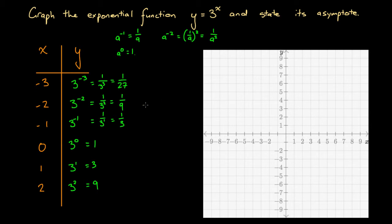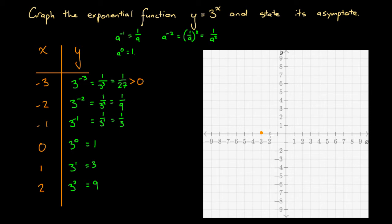So we've got a few points. Let's plot them on this graph to see what this function looks like. At x equals minus 3, y equals 1 over 27 — that's 3 units left of the origin and a tiny fraction of a unit up, so we draw this point about there. It's very close to y equals 0, but not y equals 0 — it's just above y equals 0. At x equals minus 2, y equals 1 over 9 — that's 2 units left of the origin, still positive but larger than the previous point.